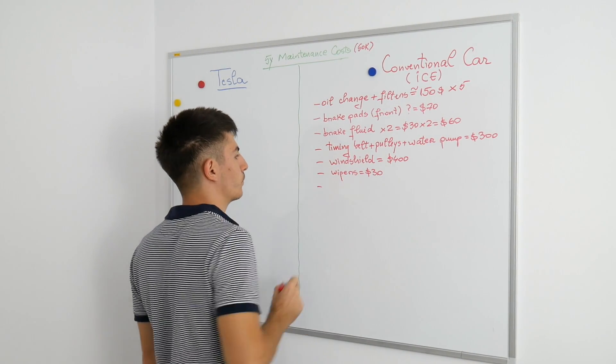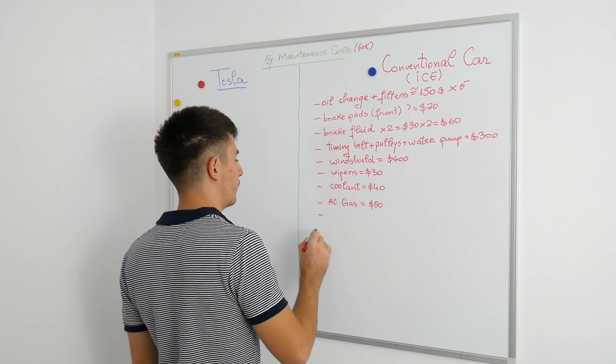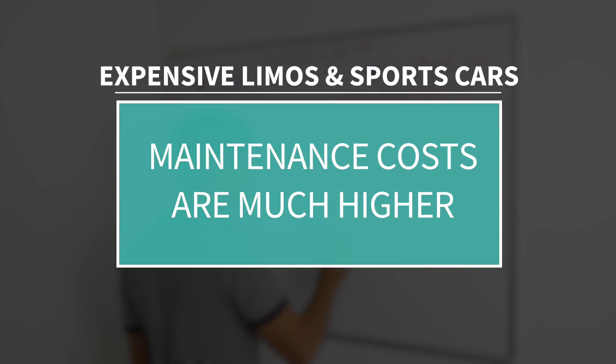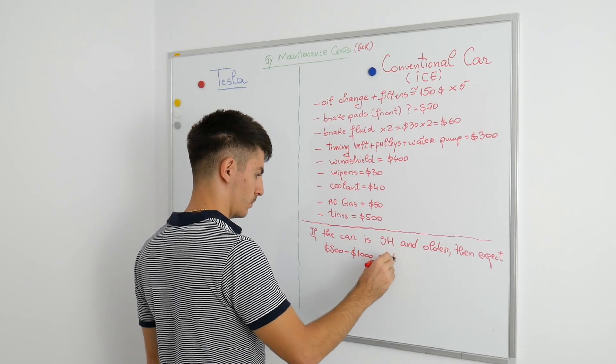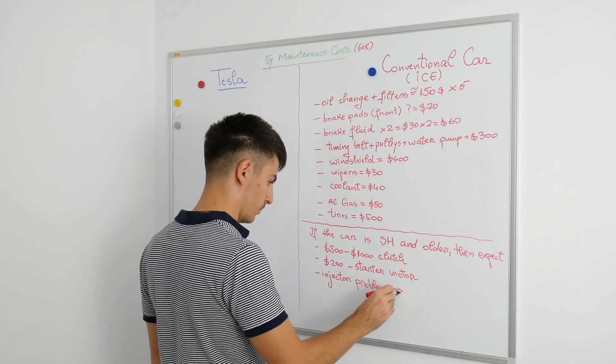I will compare the maintenance costs for a Tesla and for a conventional car over a 5-year time frame. Every conventional car needs what I'm writing here, and these are just average prices. If you have an expensive limousine or a supercar, prices will significantly increase. If you don't have a brand new car, expect to replace some of the following components.